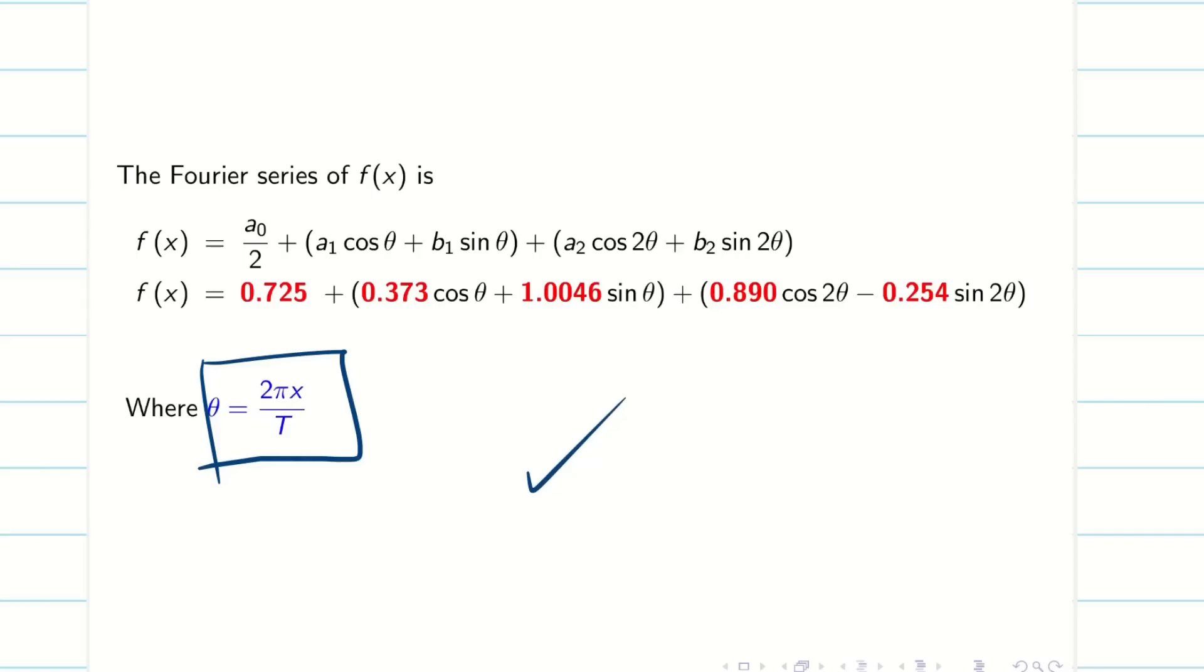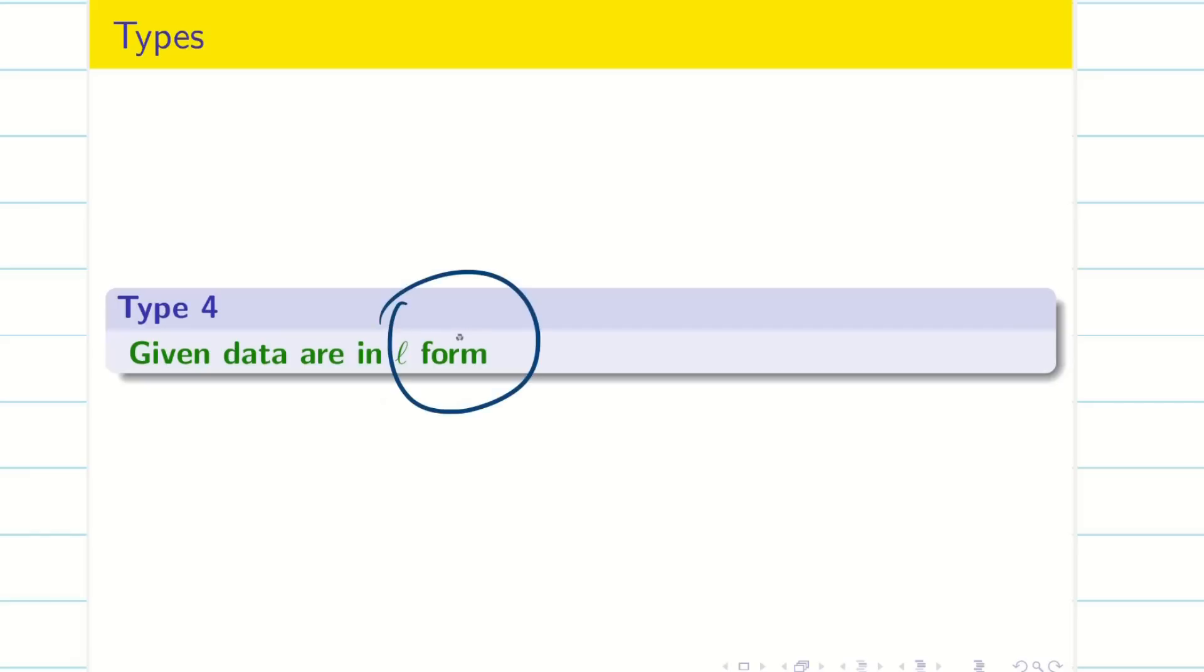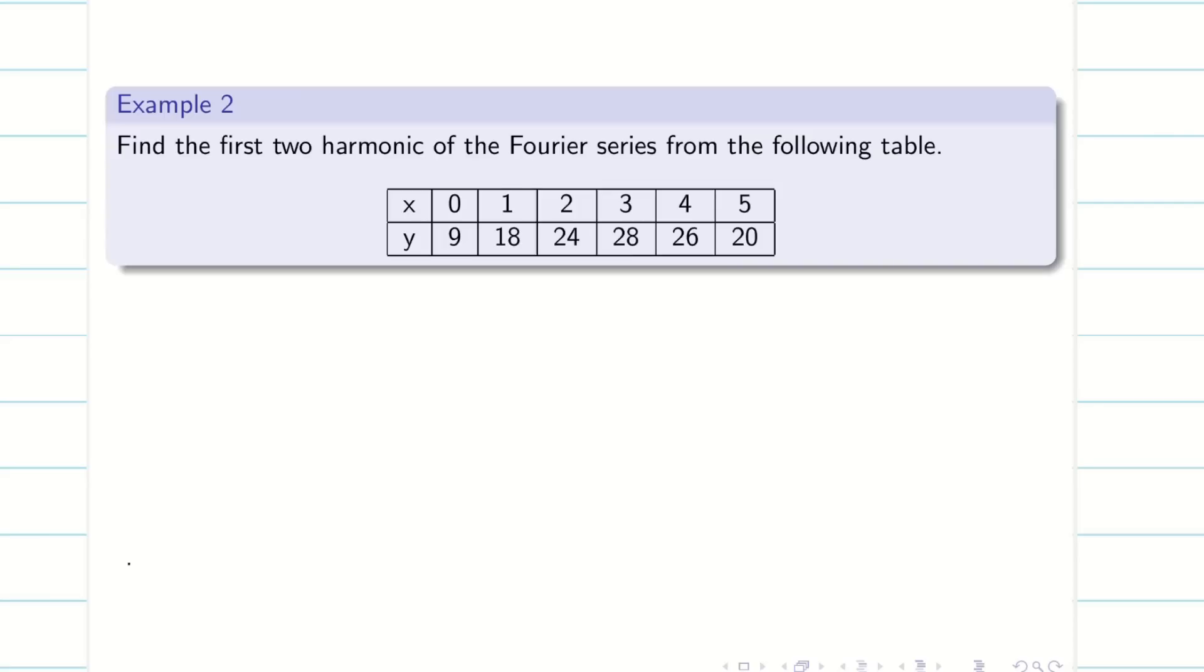Now let's go into type 4. If the problem is given in L form, that is in number format, then how to crack this? Same procedure. First let's go into the problem. The problem is given in number format. Now first, as usual, find the full length and n, then we go to the problem. We write the given values. Now check the y value: the starting value is 9 and the ending value is 20. That means the table is incomplete.